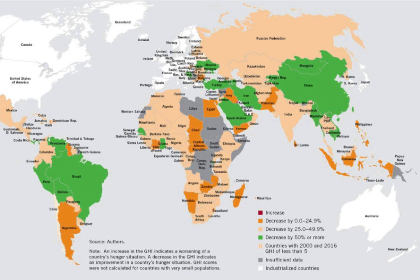These averages conceal some troubling results within each region, however, including scores in the serious range for Tajikistan, Guatemala, Haiti, and Iraq, and alarming in the case of Yemen, as well as scores in the serious range for half of all countries in East and Southeast Asia, whose average benefits from China's low score of 7.5.